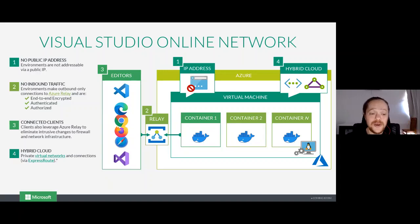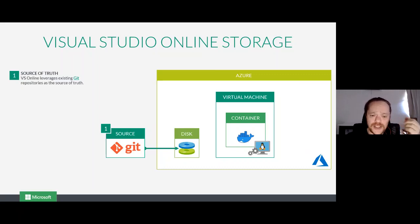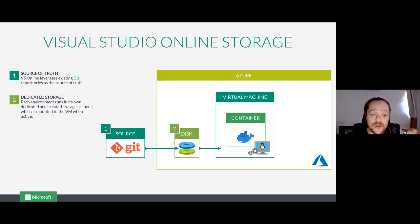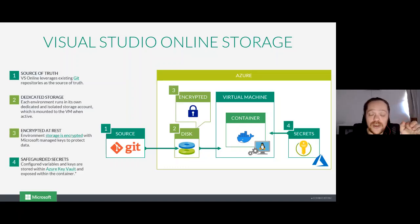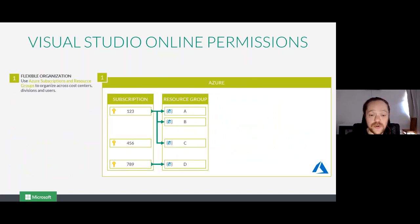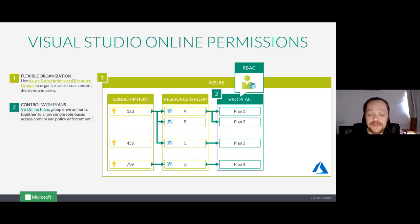I'm going to show you how to do a hybrid cloud — you can connect with virtual networks, connect with your local infrastructure. For storage, we've got Git as the single source of truth. You can connect to other providers. You've got dedicated storage per instance, so each environment runs its own dedicated storage account mounted to the VM when active. You can connect to file-based storage also, encrypted at rest. You can use Azure Key Vault for your safeguarded secrets, and Azure subscriptions and resource groups for permissions to organize across divisions and users.